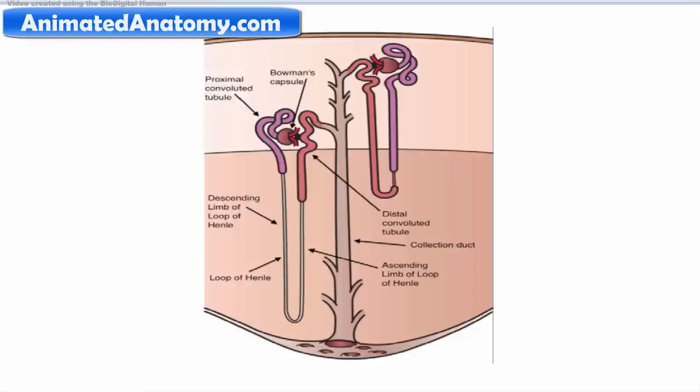There are two general classes of nephrons and those are the cortical nephrons and juxtamedullary nephrons, both of which are classified according to the length of their associated loop of Henle.